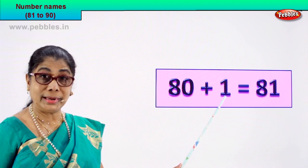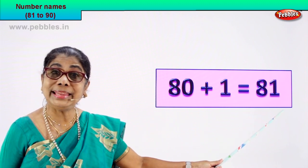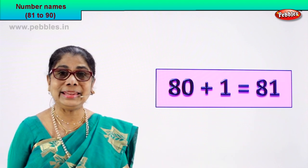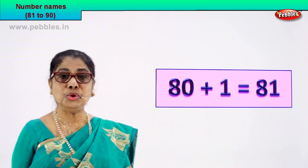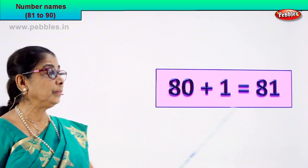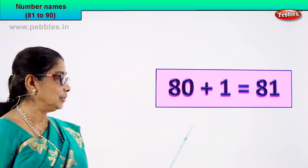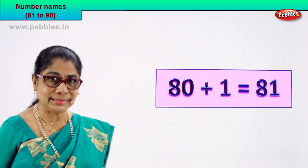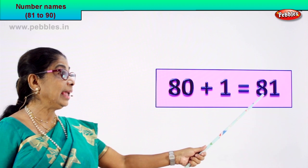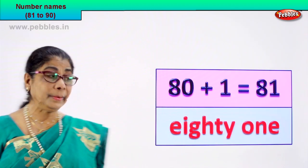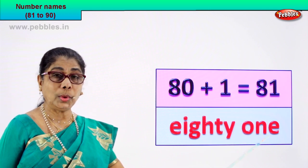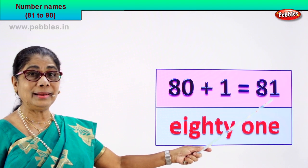Here we are — 80 plus 1 is equal to 81. The numeral is 81. How do we write the name of this number? You already know 80, you already know 'one'. 81 is written as: eighty — E-I-G-H-T-Y — and one — O-N-E.